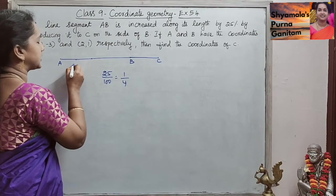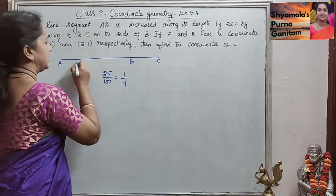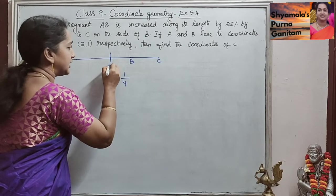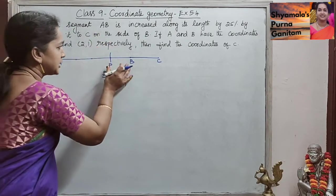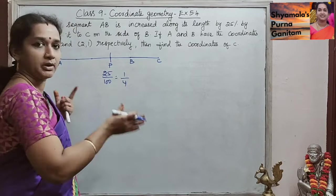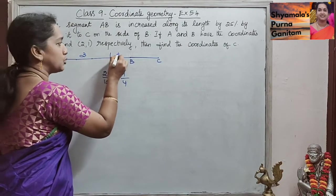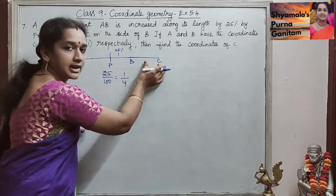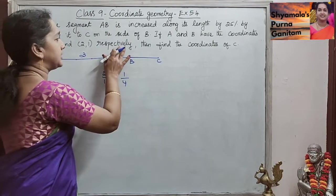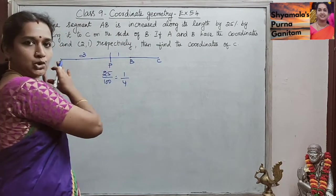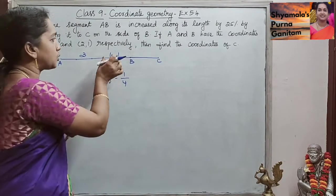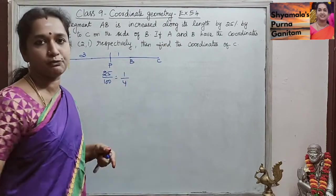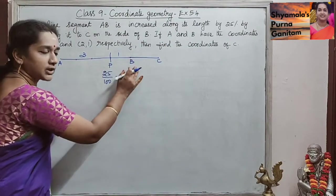So we will mark it like this: 1, 2, 3, 4. In these 4 parts, we will take a point P. This PB they are increasing to B — because this is only 25%, so this 25% they are increasing on the other side. So we take the ratio as 3 is to 1. Totally 4 parts, in that one part is 25%, and that 25% they are increasing on the side of B.